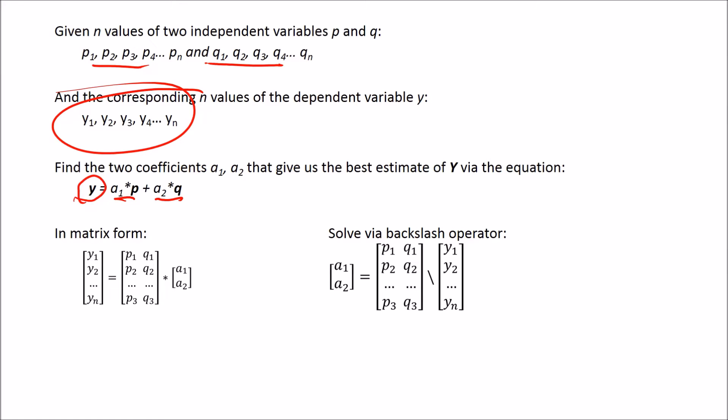If I put that in matrix form it looks like this, where I have column vectors for each of my independent variables, I have a column vector of my dependent variable, and to come up with a1 and a2 I use the backslash operator in this form.